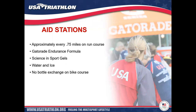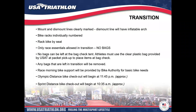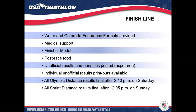Aid stations are approximately every 0.75 miles on the run course, offering Gatorade Endurance Formula, Science in Sport gels, water, and ice. There are no aid stations on the bike course. Mount and dismount lines will be clearly marked; bike racks are individually numbered. Please rack your bike by the seat prior to race start; after the bike portion you may rack by bars or seat. Only race essentials are allowed in transition — bags left in transition will be removed. On-course bike support is provided by Bike Authority. At the finish line, water, ice, and Gatorade Endurance Formula will be provided, as well as medical support by University Hospitals.